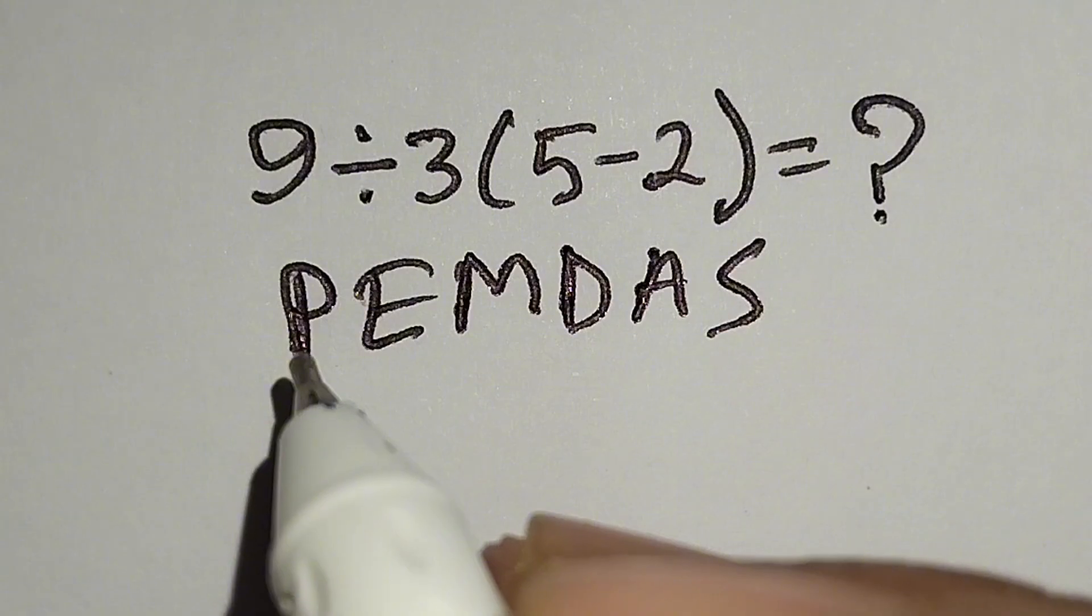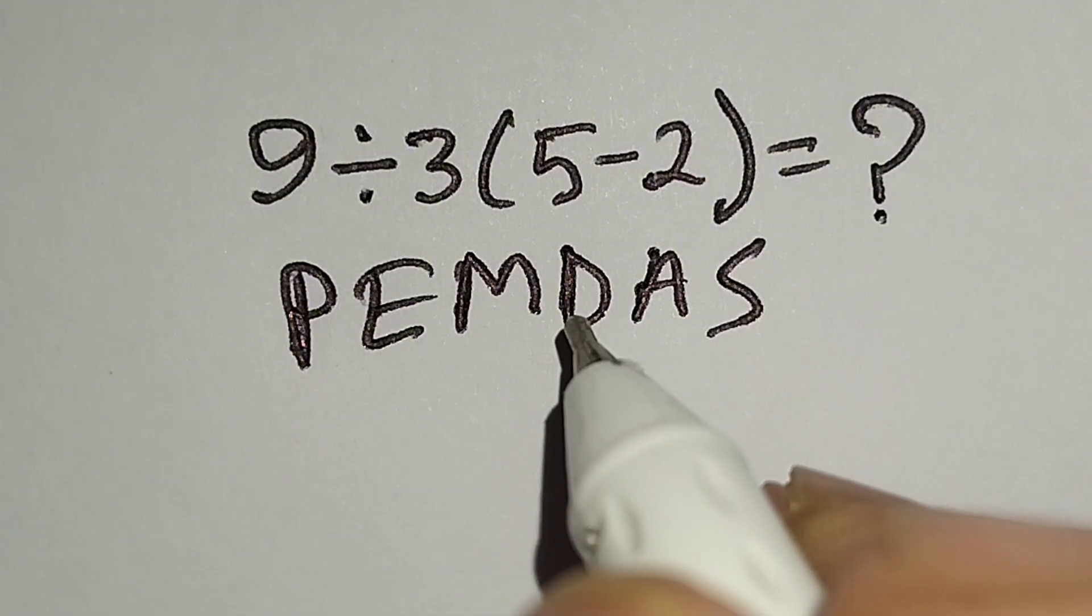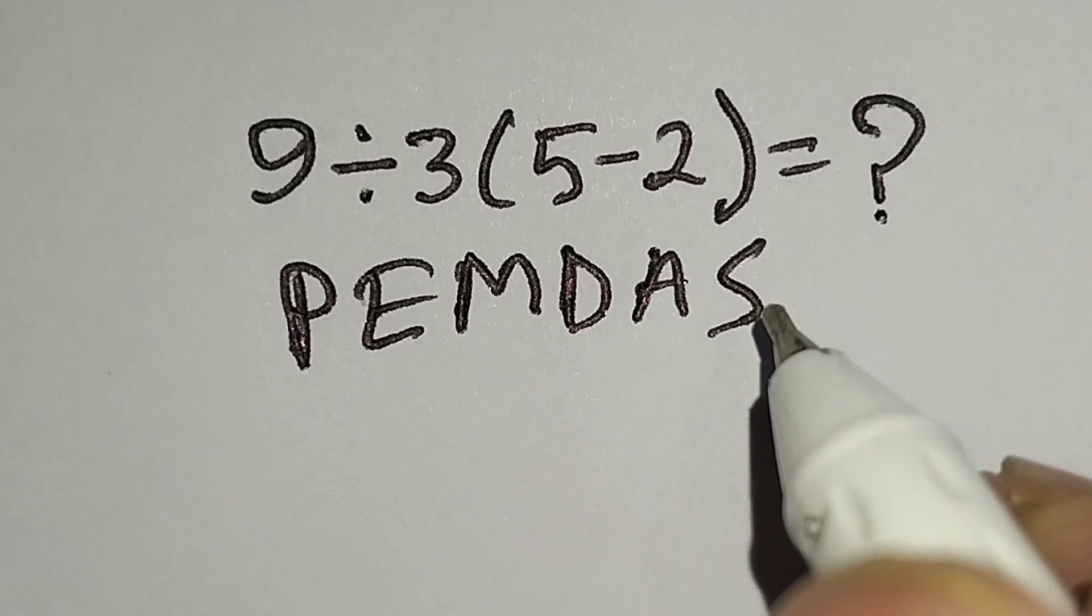According to PEMDAS rule, at first we have to work with parenthesis, then exponent, then multiplication or division, then addition or subtraction.